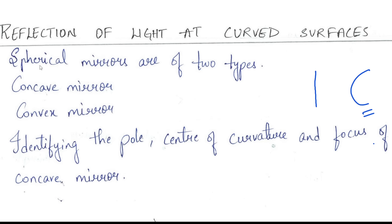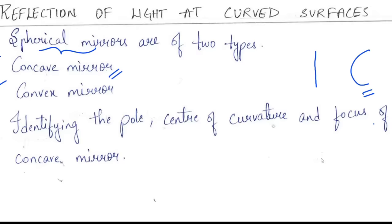Basically mirrors are of two types: one which have a plain surface and one which have a curved surface. These curved surface mirrors are called spherical mirrors. Spherical mirrors are further divided into two types: concave mirror and convex mirror.